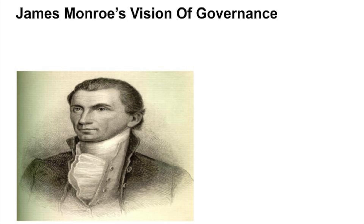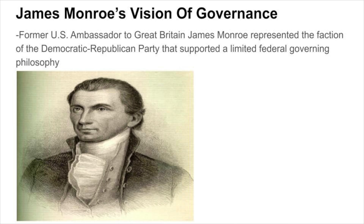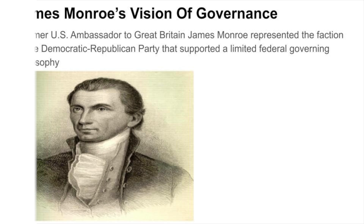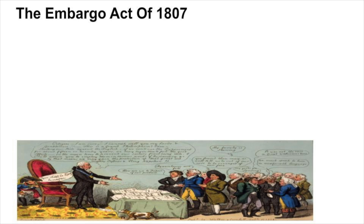Meanwhile, former U.S. Ambassador to Great Britain James Monroe represented the faction of the Democratic-Republican Party that supported a limited federal governing philosophy. Although President Thomas Jefferson was generally popular in his second term in office, one of his major policy enactments led to a heated primary election in the Democratic-Republican Party.